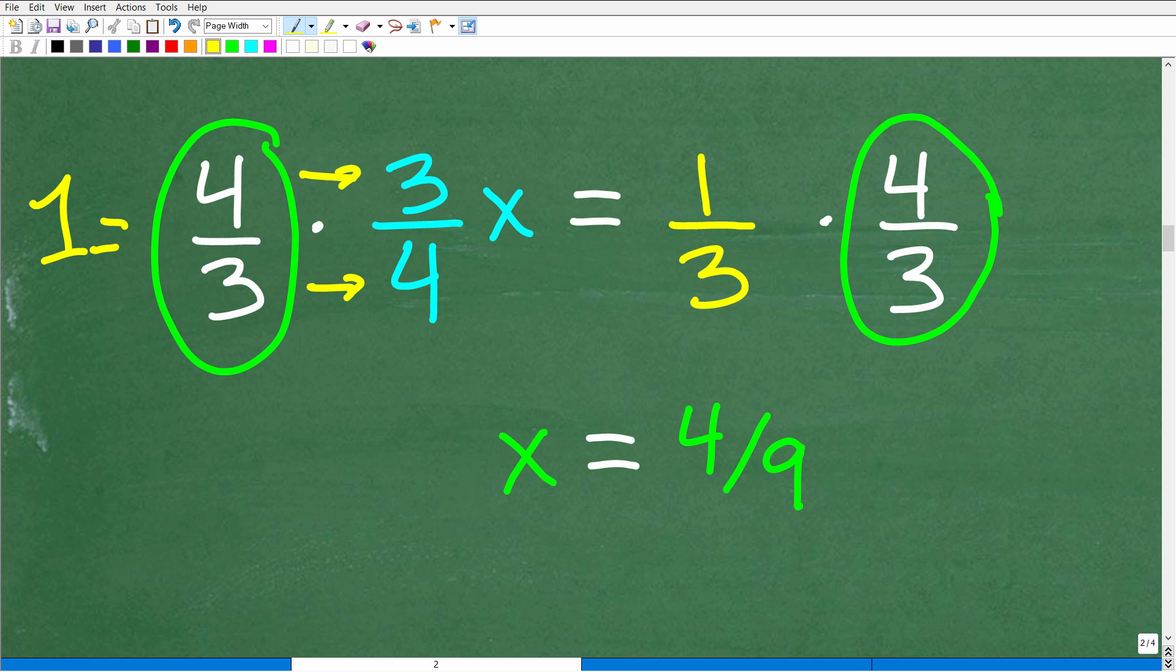But remember, in algebra, whatever I do to one side of the equation, I have to do the exact same thing to the other side. So we'll multiply both sides of the equation by four thirds. And when I multiply one third by four thirds, I'm going to get four over nine. So X is equal to four over nine.